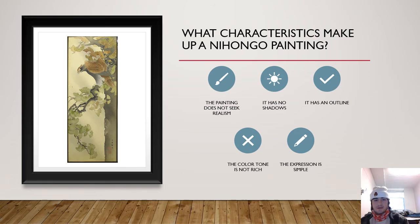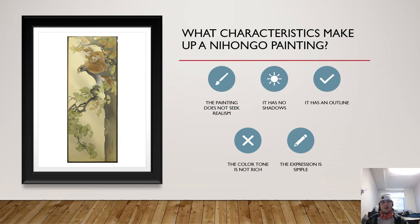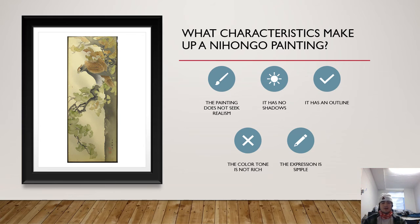The specific characteristics that make up a Nihonga painting are as follows. First, the painting does not seek realism — what you see in the painting is what the artist's mind sees in that particular moment, rather than a realistic depiction of what they literally see. Nihonga paintings do not have shadows, and they are usually very bright and never dull of color. They use a lot of whites to vibrantly make figures stand out and to give the perception of peace and tranquility. All paintings are made with an outline and a border to bring out the main piece, making it look more dimensional in the center. The color tones used are not rich, meaning artists only use basic colors, never fluorescent colors or very dark tones.